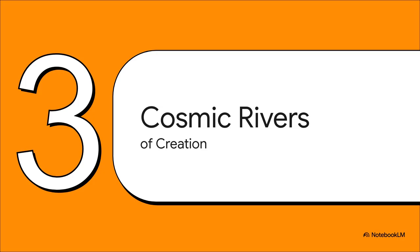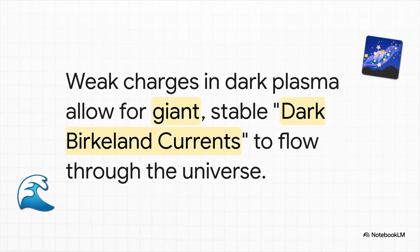Enormous, invisible rivers of electricity flowing through the universe, shaping everything we see. Alfred calls these dark Birkeland currents. Think of them as these immense rivers of dark plasma flowing along magnetic field lines. And they form a kind of cosmic electrical grid. We can't see them, we can't feel their electromagnetic effects directly, but they form the hidden scaffolding of the entire cosmos.